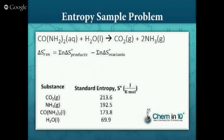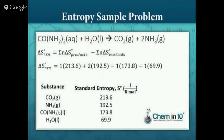Let's look at this sample problem: find the change in entropy, delta S, for the hydrolysis of urea, given the equation and the following entropy values. Since we have the standard entropies of formation of each compound, we take the entropies of formation of the products minus the entropies of formation of the reactants. Starting with the products: carbon dioxide has an entropy of formation of 213.6 — one mole — plus two moles of ammonia at 192.5 each. Subtract the reactants: one mole of CO(NH2)2 at 173.8, and one mole of liquid water at 69.9. Totaling all of that up, we get the standard change of entropy as 354.9 joules per kmol.